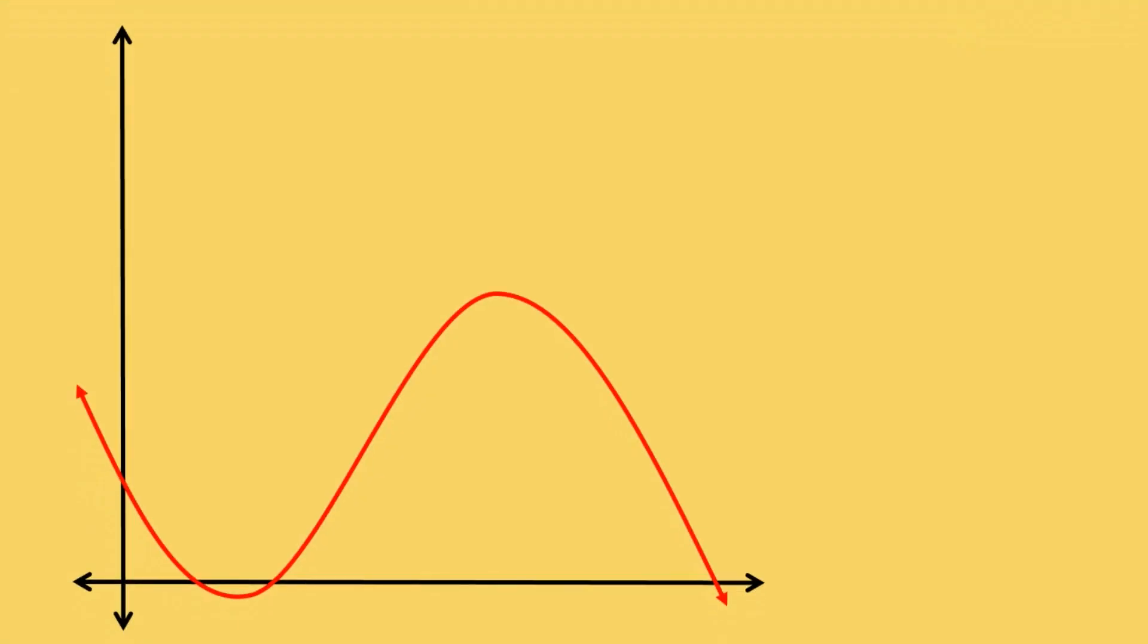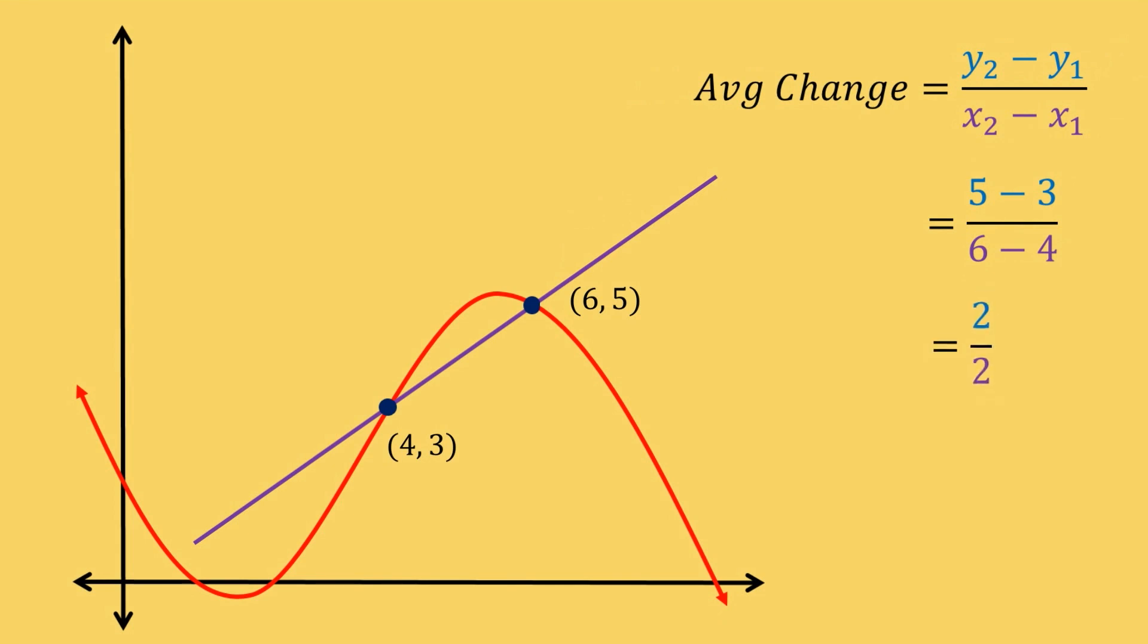Here we have a function and I want to know the instantaneous rate of change at this point here. I'll choose it along with one other point. Now I can measure the average rate of change between these two points using my average rate formula and when I do I get a value of 1.